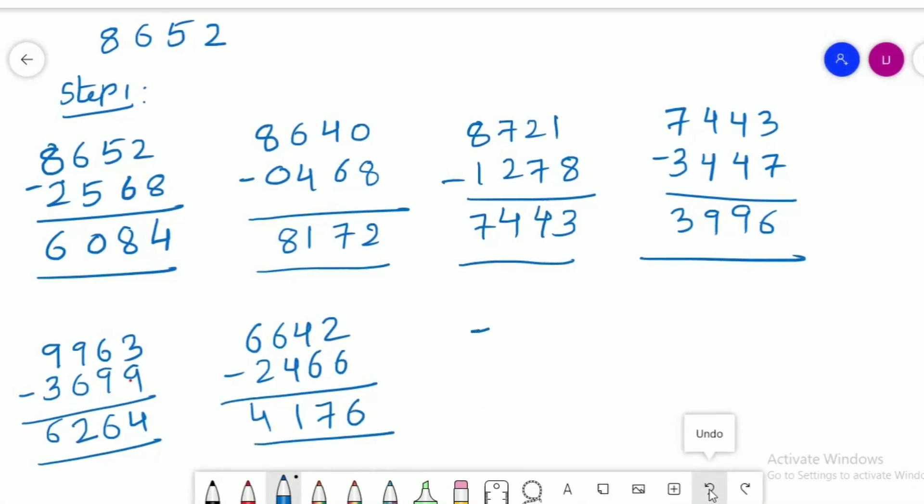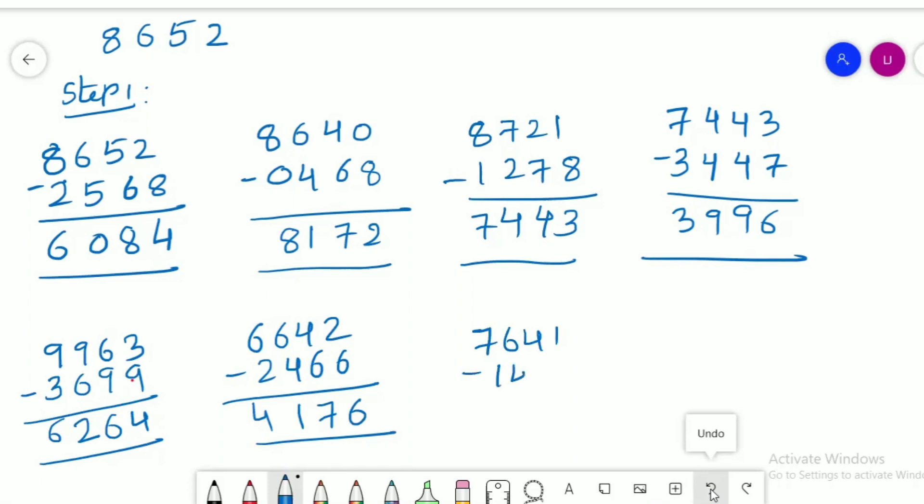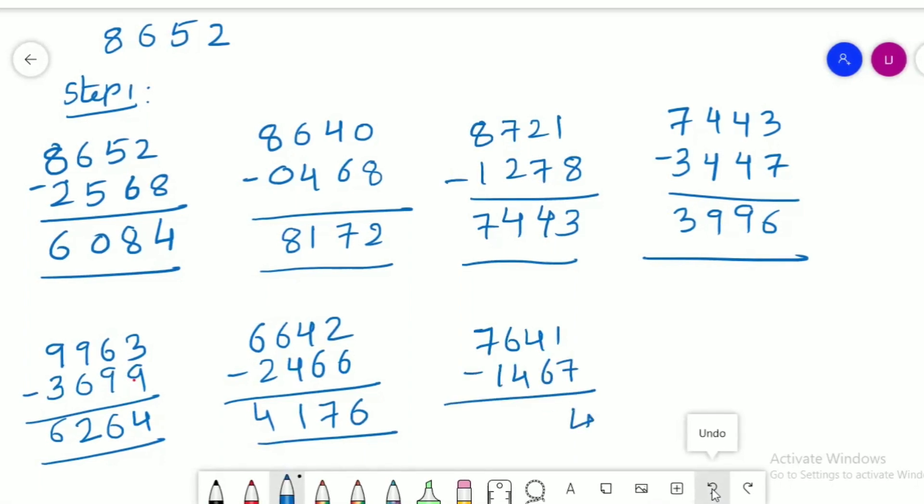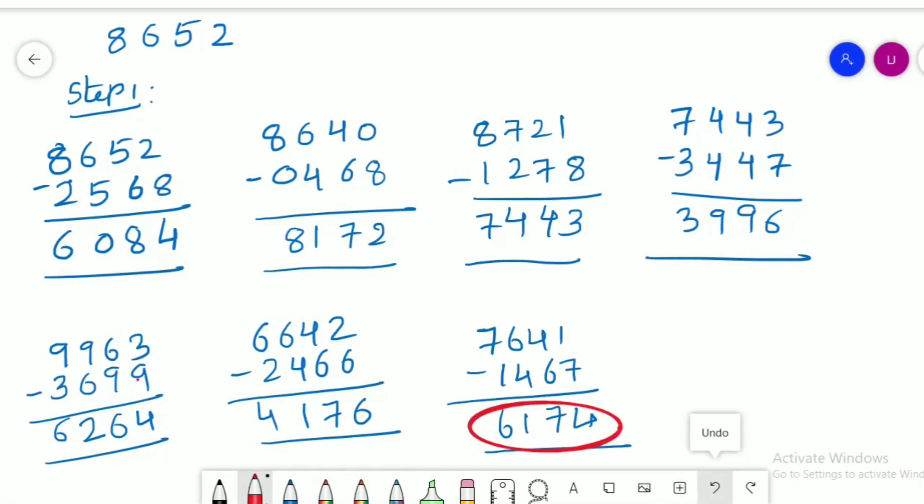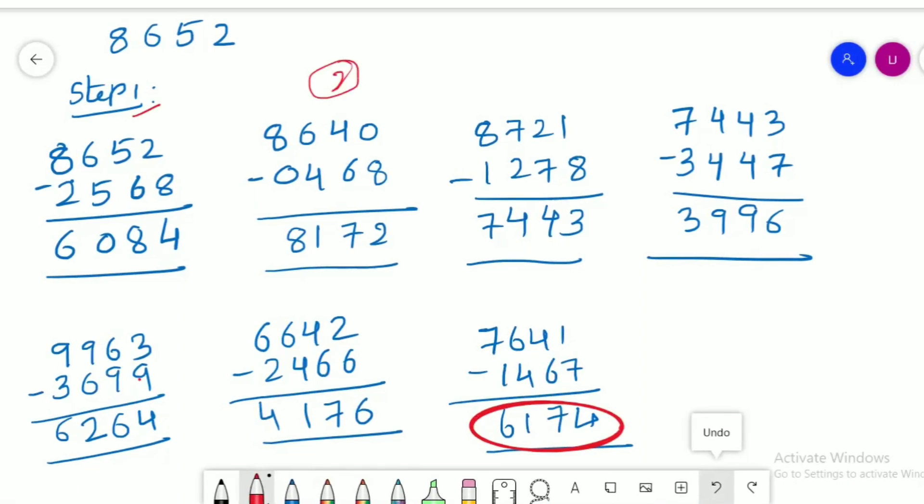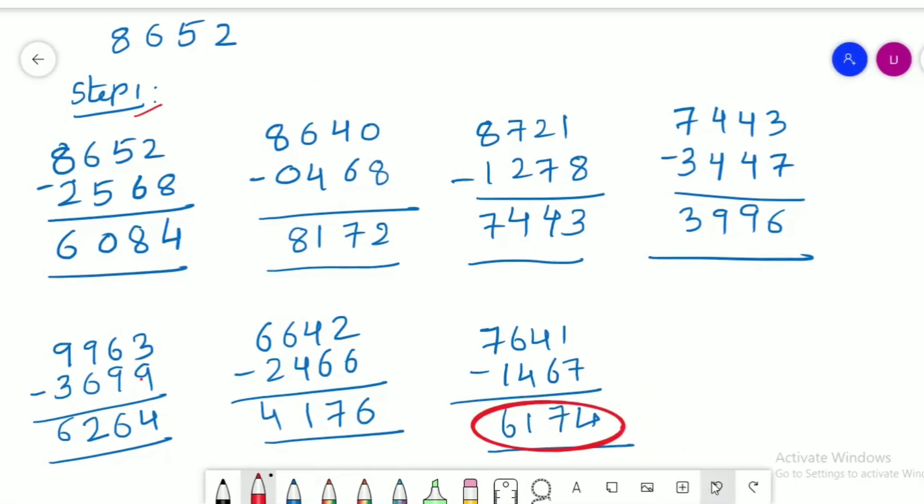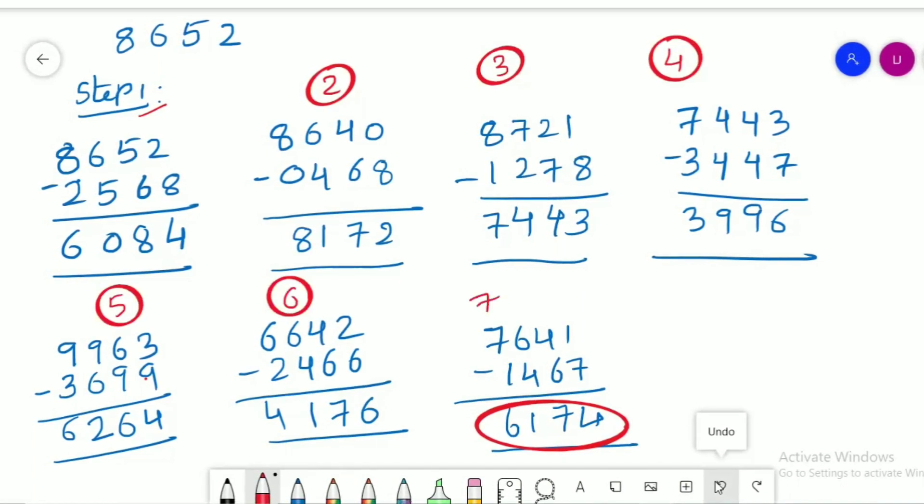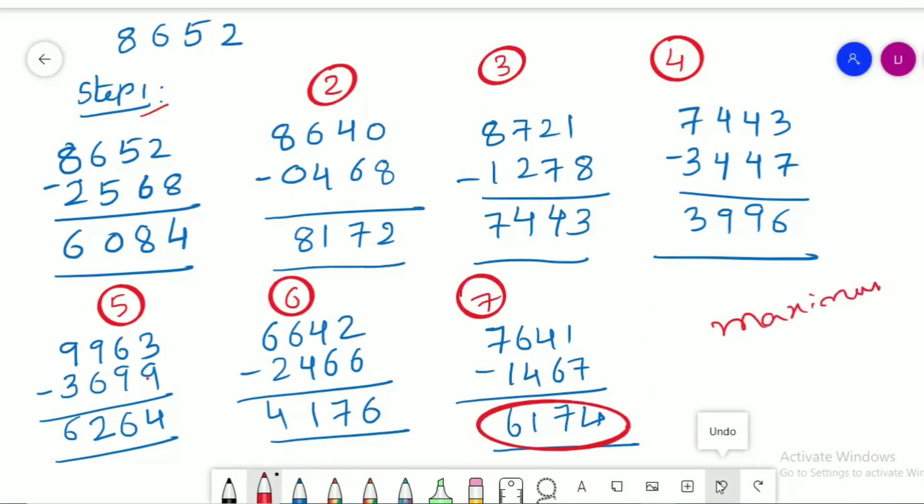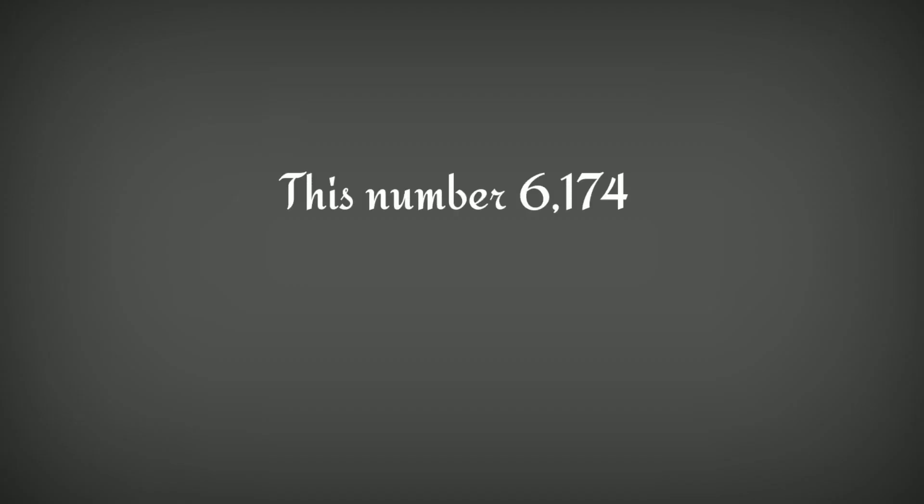Here the answer is 4176. We can repeat one more. Yes, yes, we got 6174, right? So the number of steps: 2, 3, 4, 5, 6, 7. In seven steps we got this result. So this number 6174 is known as the Kaprekar constant.